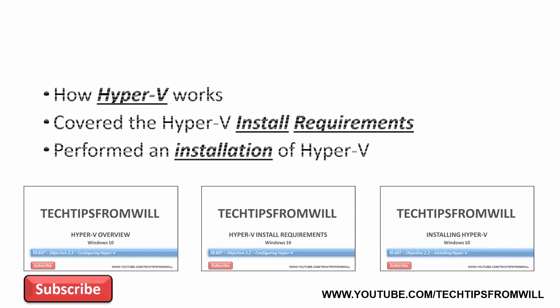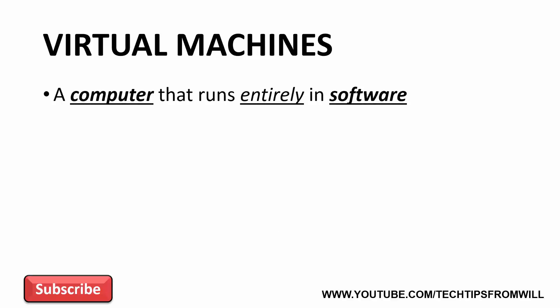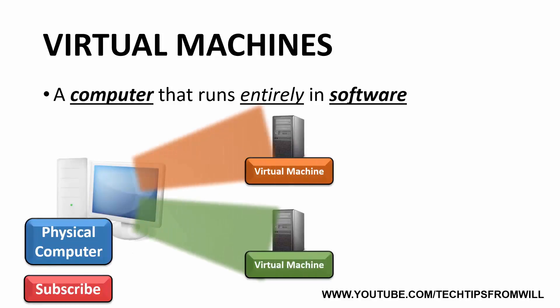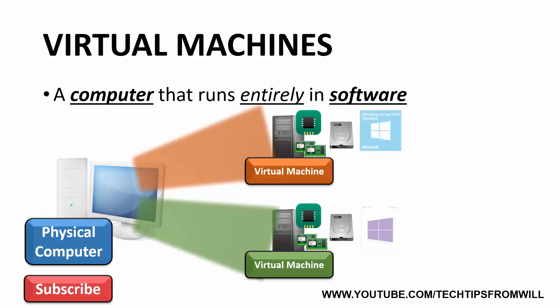Now that Hyper-V has been installed, we're now able to create our first virtual machine. Remember, a virtual machine is essentially a computer that runs entirely in software. With virtual machines, the administrator is able to create entirely separate computer instances. Each of these instances has their own CPU, RAM, hard disk space and operating system installed. With virtual machines, the administrator is able to run multiple operating system instances side by side on the same physical computer at the same time.